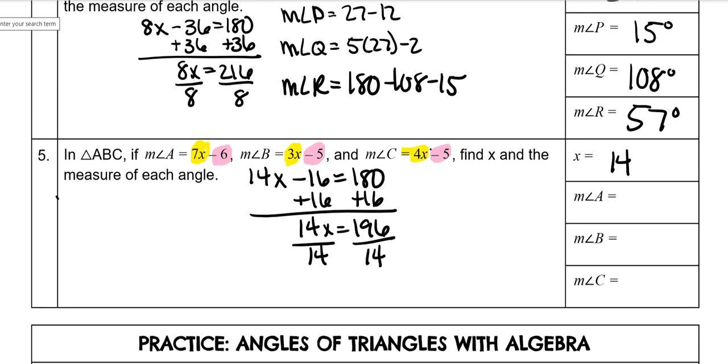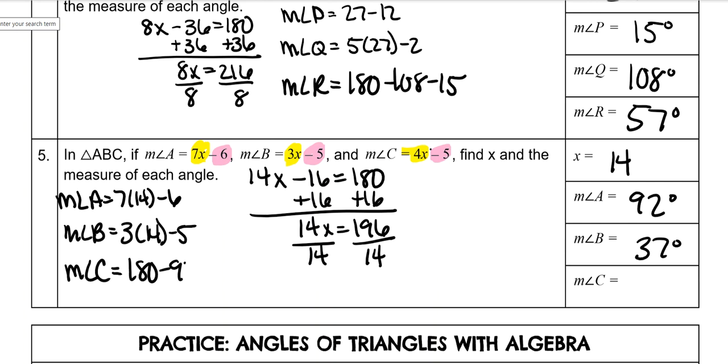And again, plug in for all of your angles. So 7 times 14 minus 6, that gives you 92 degrees. Measure of angle B is 3 times 14 minus 5, that gives you 37. And then for C, you can do it the easy way where you do 180 minus 92 minus 37, which is 51. And that's the end of our notes.